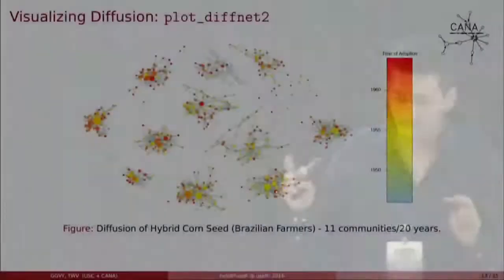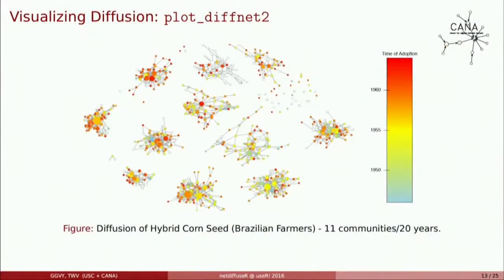Alternatively, if you want another way of visualizing diffusion, you can use this sort of heat map for vertices. It's the same data but a different layout. Vertices are now colored so that early adopters are colored in blueish and laggards in red. You can see the diffusion patterns this way too.